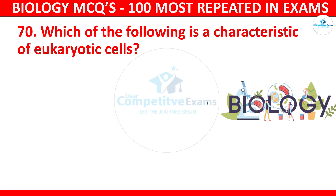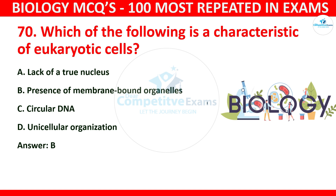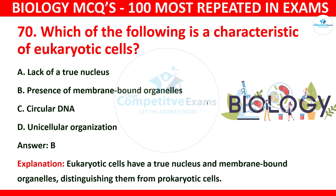Question number 70: Which of the following is a characteristic of eukaryotic cells? The options are lack of true nucleus, presence of membrane-bound organelles, circular DNA, or unicellular organization. The correct answer is B: presence of membrane-bound organelles. Eukaryotic cells have a true nucleus and membrane-bound organelles, distinguishing them from prokaryotic cells.